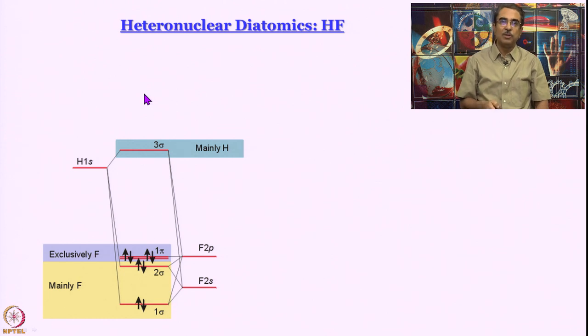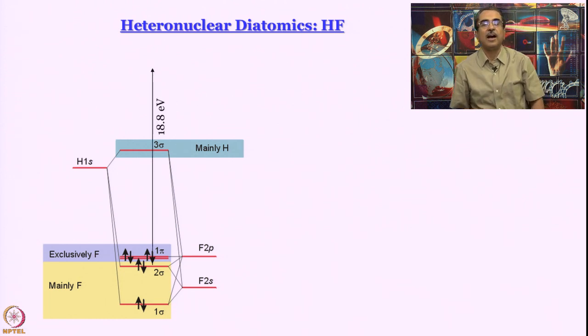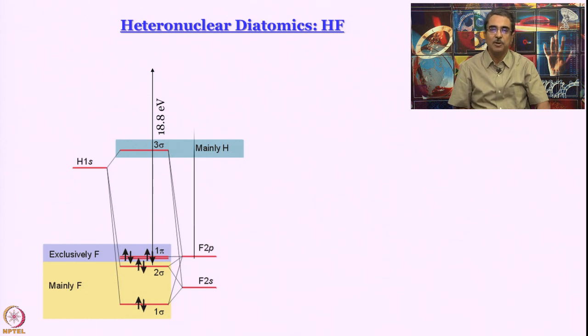How do I know all this? I know this from ionization energies, which is determined by photoelectron spectroscopy. It is established that for HF, you have an ionization energy of about 18.8 electron volt, which is very close to the value of ionization energy for fluorine atom 2p. So, energetically, this diagram is correct.